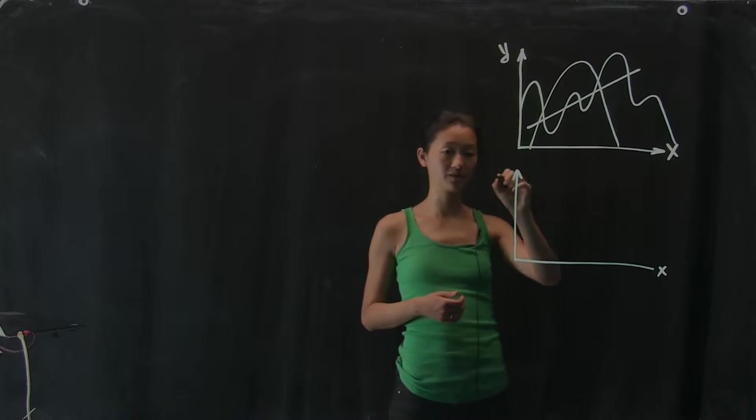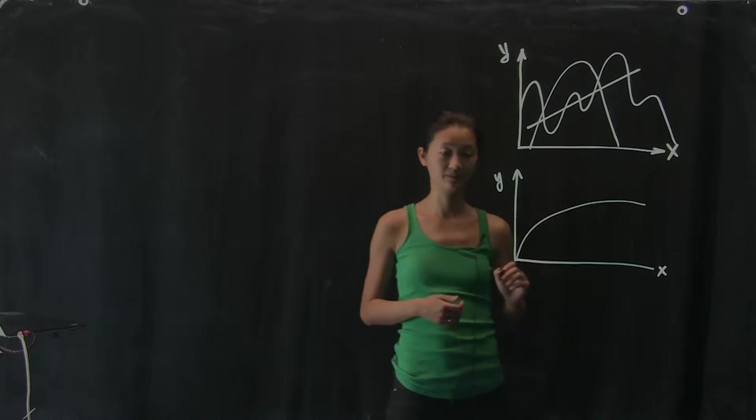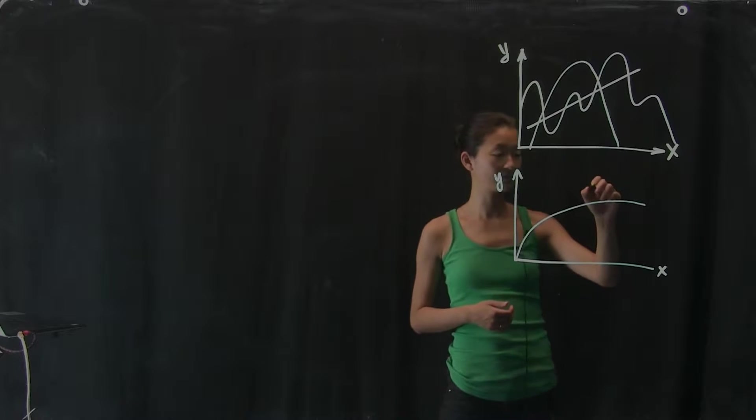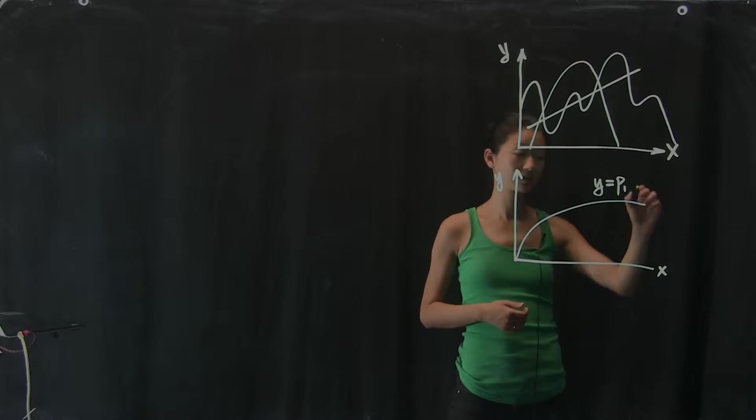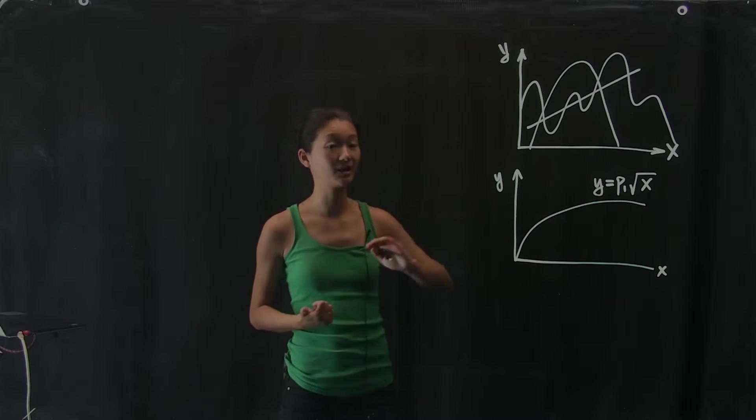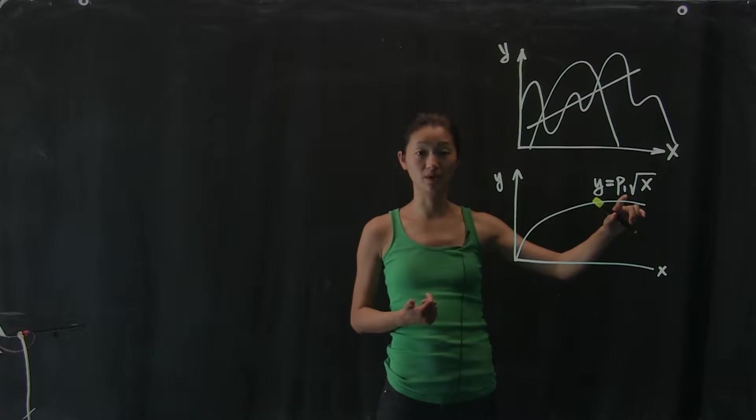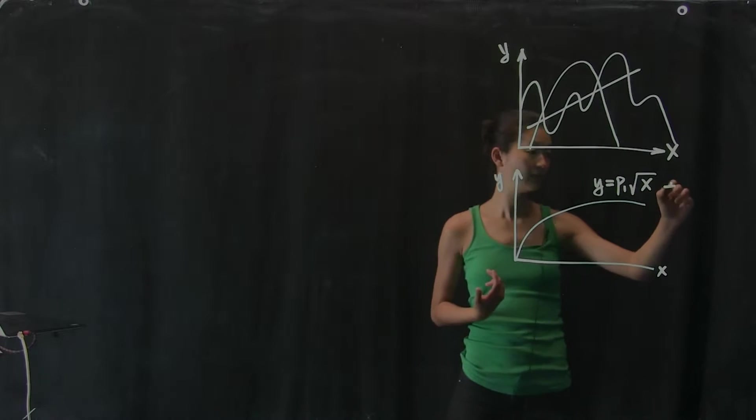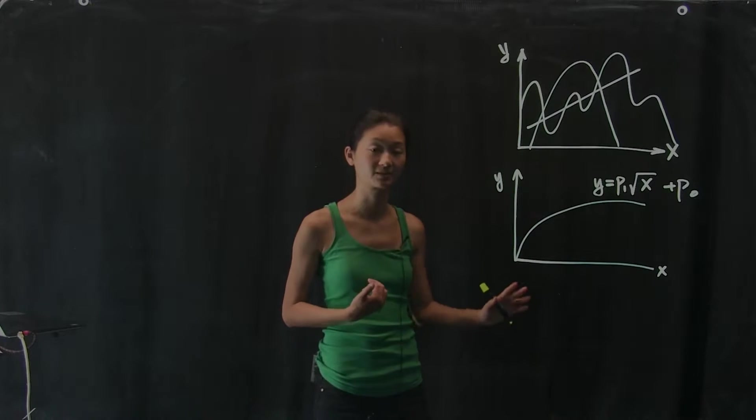For example, what if I want to fit my data with something that looks like that? Now, this is saying that y equals some number times the square root of x. That works just fine. As long as I can write down the functional form, I can ask the question, what is p1? You can even add a constant term out here if you want to, just to account for some kind of offset.